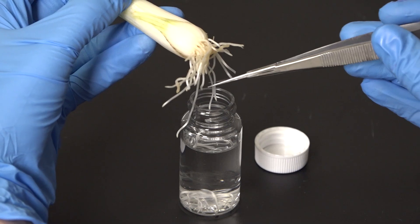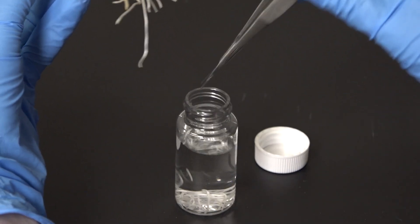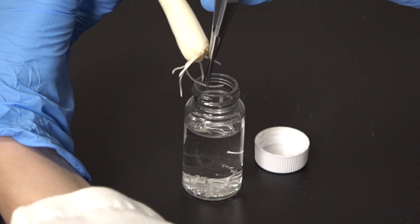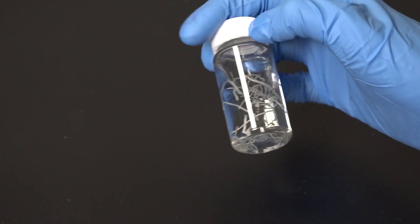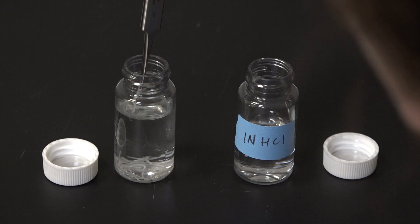I'm using scallions. I've let their roots grow in water for a few days prior to the experiment. First, I'll cut off some root tips into the vial of Farmer's fixative and leave them for at least four hours - overnight is great too. The chemicals will preserve the DNA in the roots. Then I'll transfer them to the vial of hydrochloric acid and let them sit for two minutes to soften the root tissue.